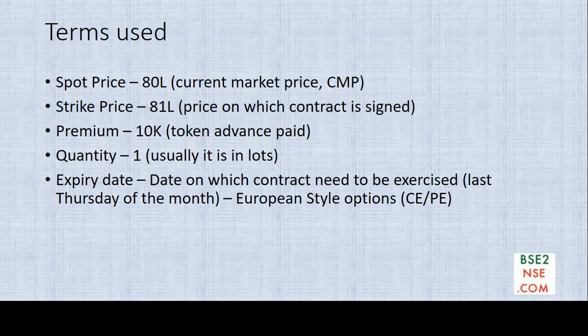Expiry date: every contract should have an end date. In our market the last Thursday of every month is the expiry date. In India we follow European-style options, which is why we have the terms CE for call option and PE for put option. The 'E' denotes European style, where contracts can be exercised only on the expiry date, not before. The underlying asset in our example is the house; in the case of stocks, the underlying asset is the actual stock on which the option contracts are made.